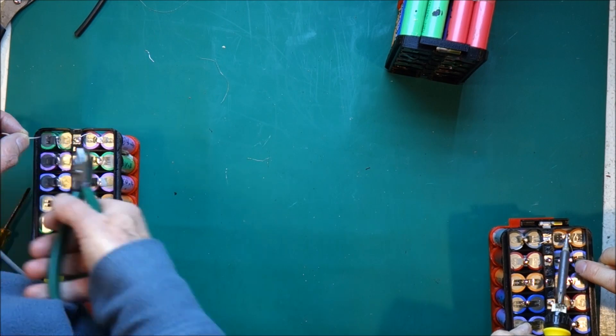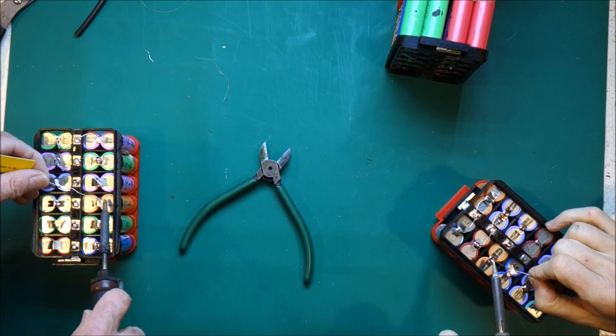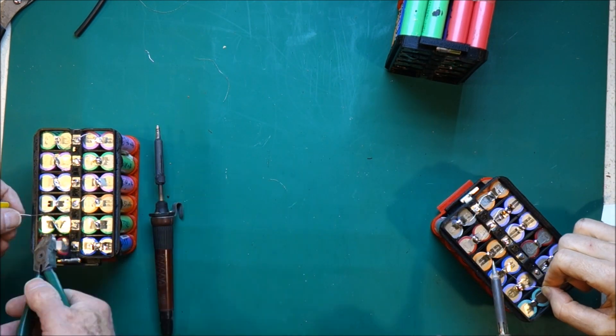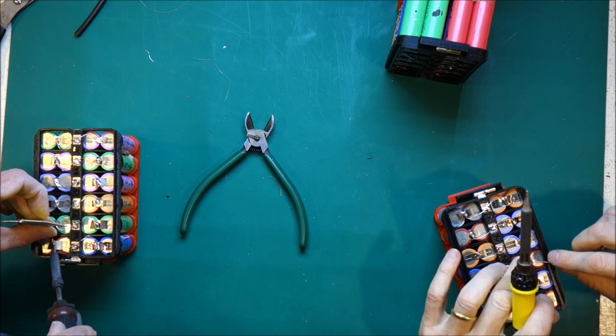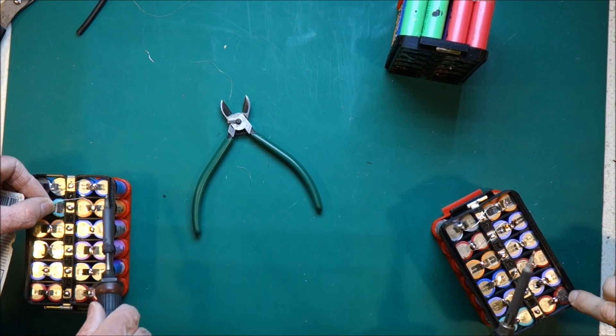Once we've done all the positive side we flipped over and did the negative side. In this case we used some old 10A fuse wire that I had lying around. It doesn't really matter what it is on the back side as long as it's thicker than the 5A fuse wire.